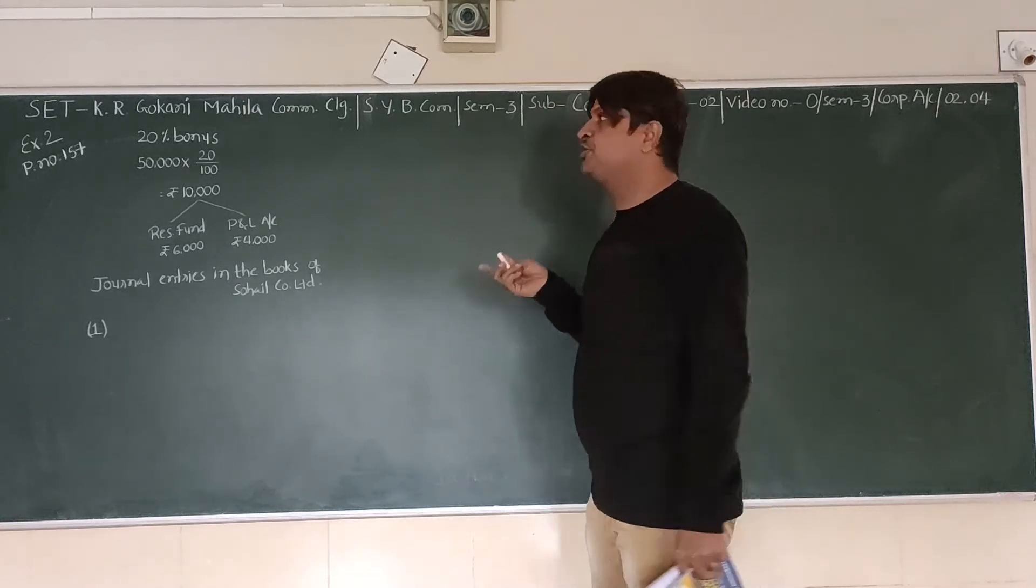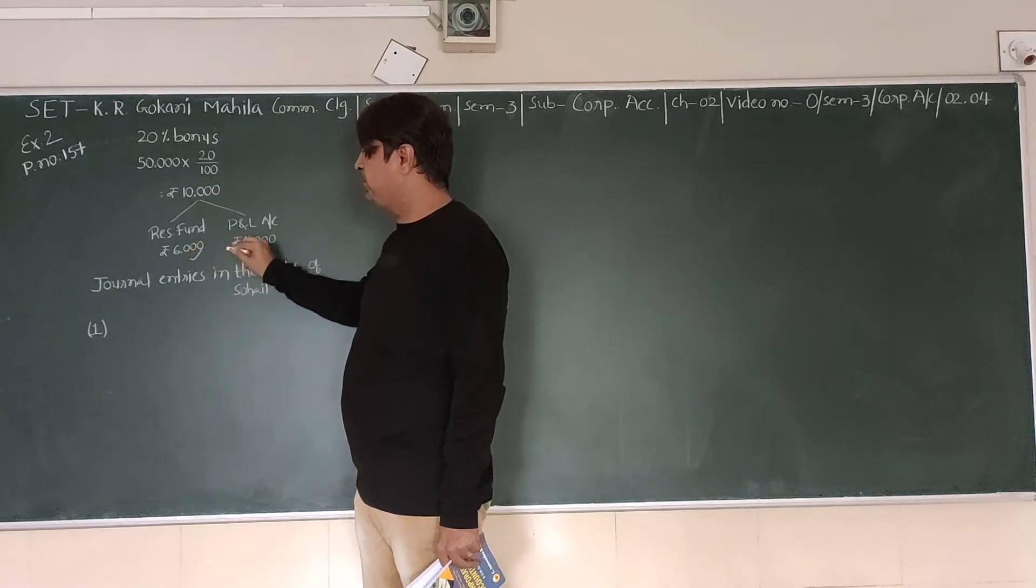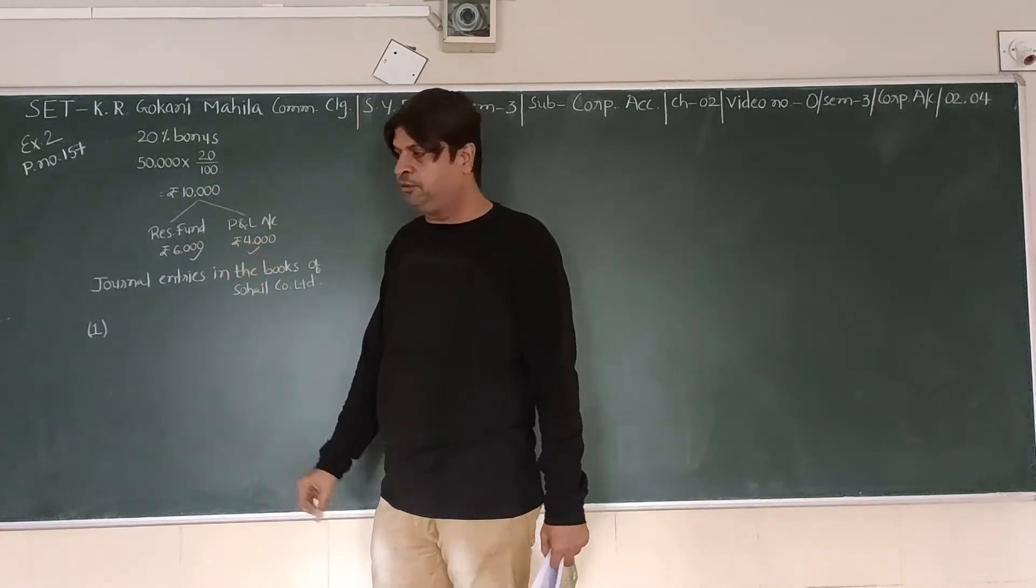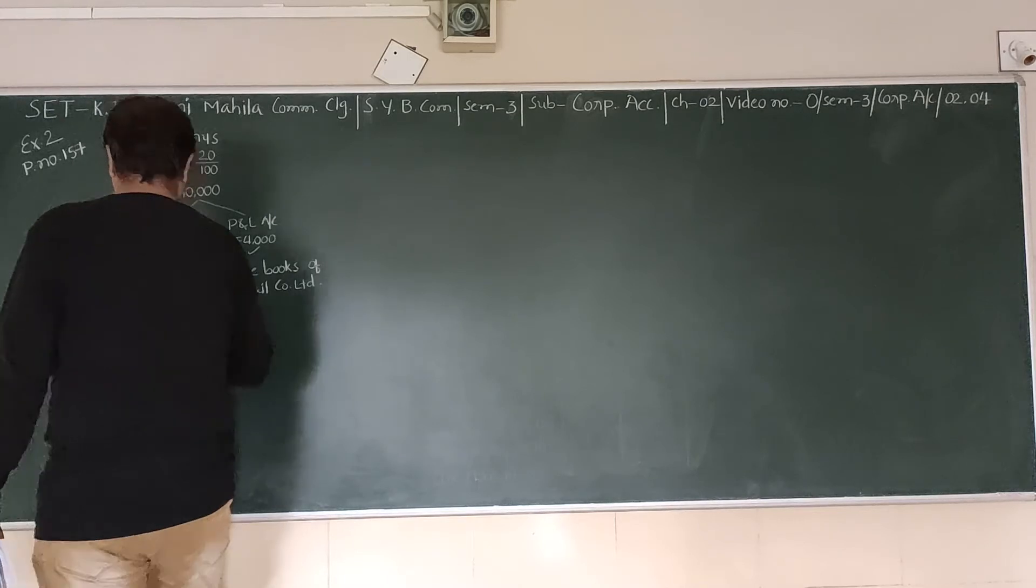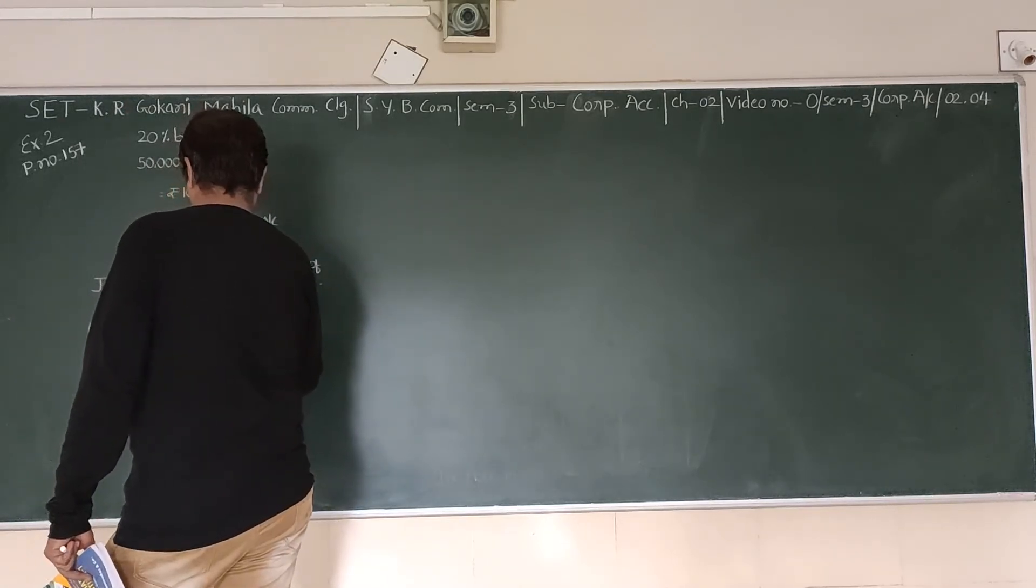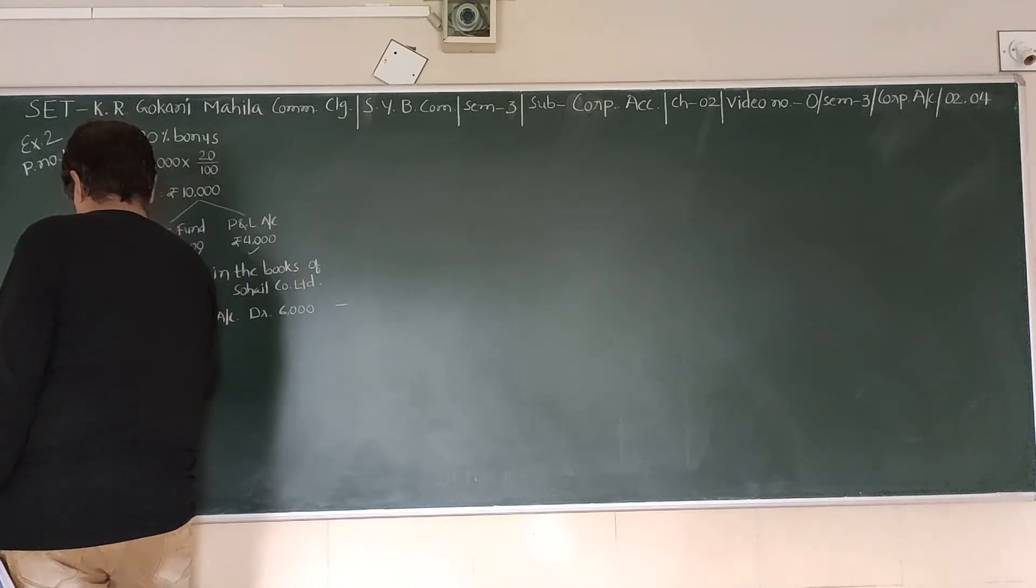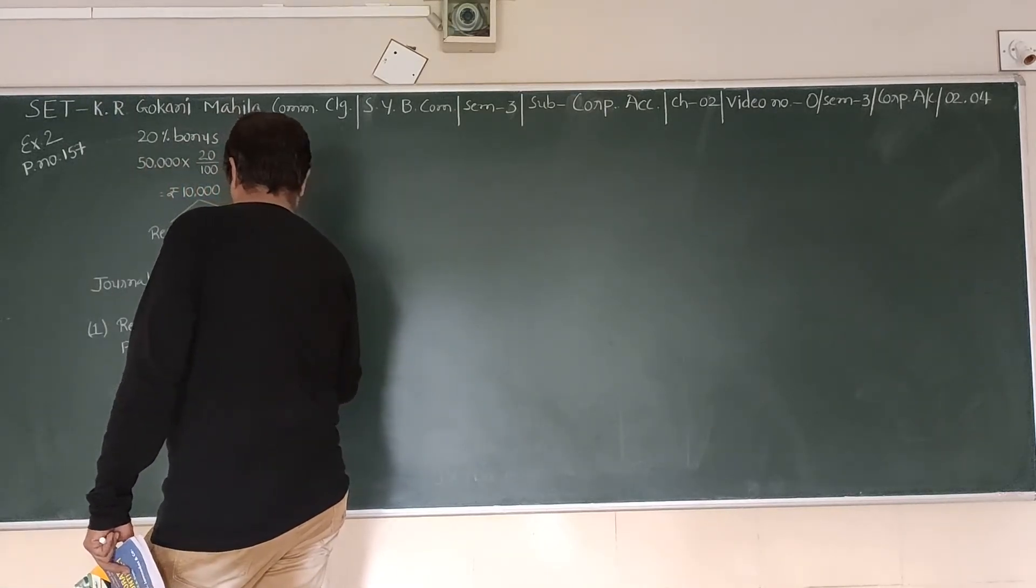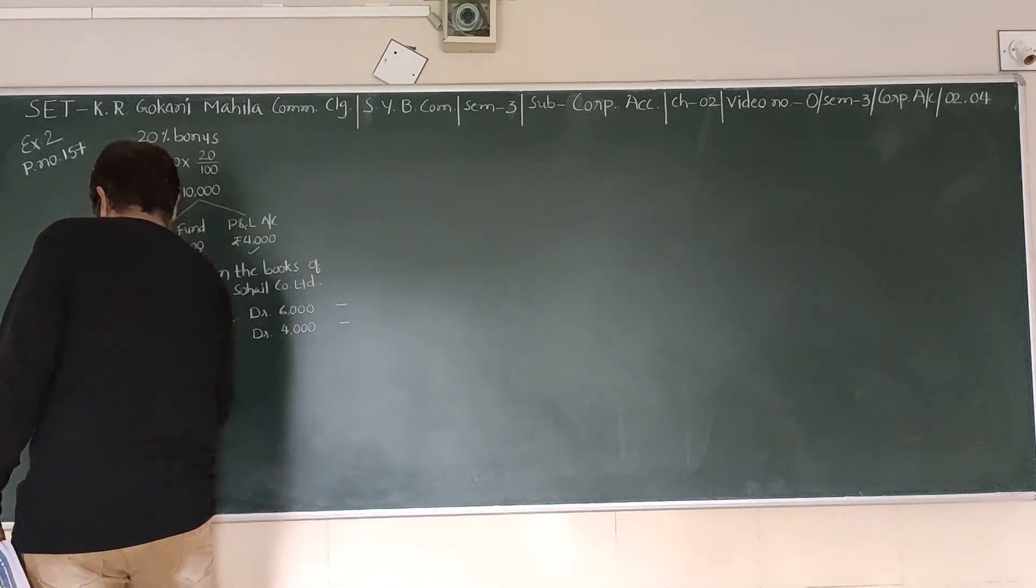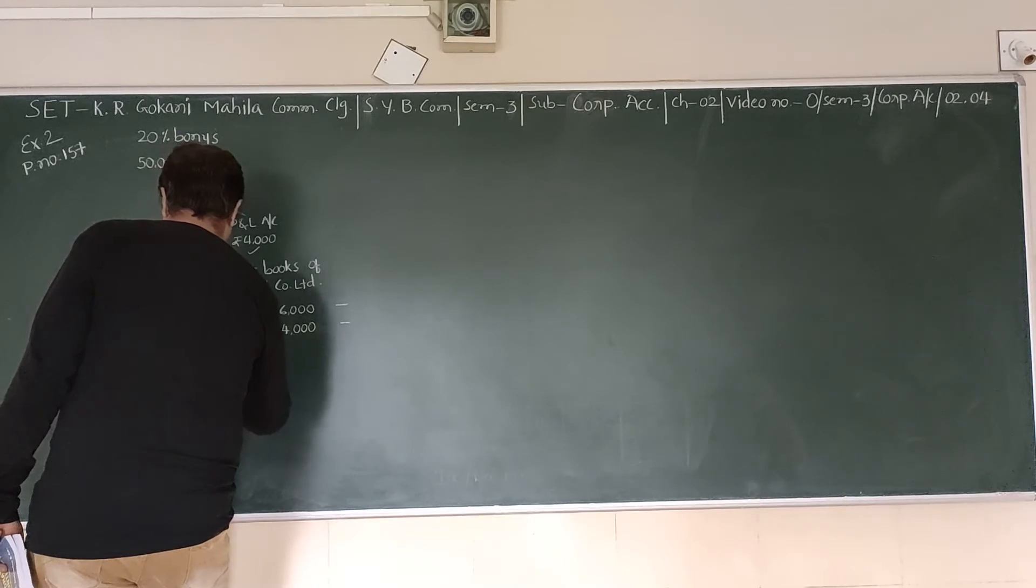The first journal entry is to provide the necessary amount. 10,000 rupees are to be provided, out of which 6,000 from Reserve Fund and 4,000 from P&L. Reserve Fund account debit 6,000 rupees, Profit and Loss account debit 4,000 rupees, to Bonus to Shareholders account credit 10,000 rupees.